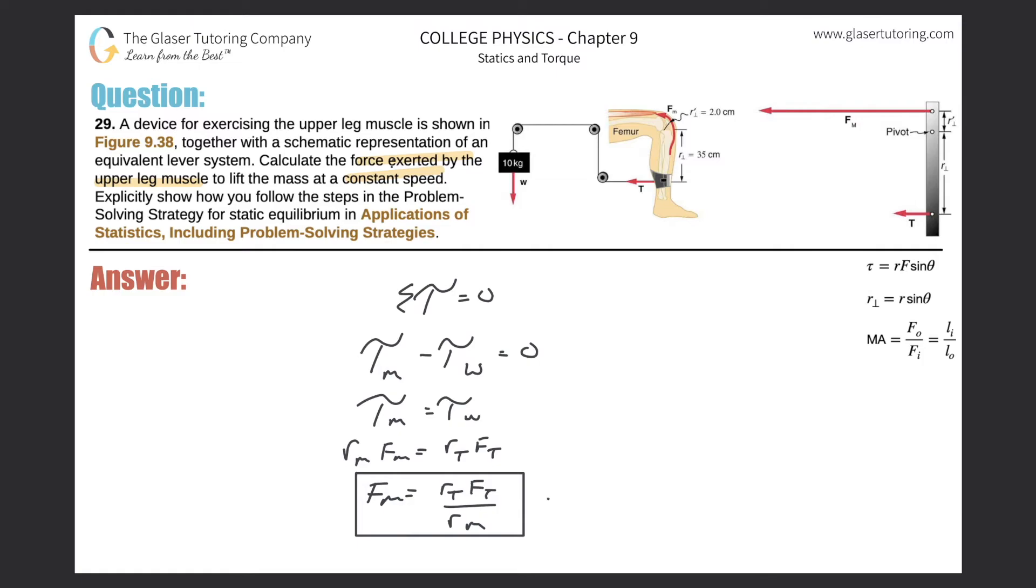The lever arm for the tension is the distance between where that tension is acting and the axis of rotation. They told us 35 centimeters. We don't have to convert to meters, but I'm going to anyway—you can always be safe that way. So that's 0.35 meters.